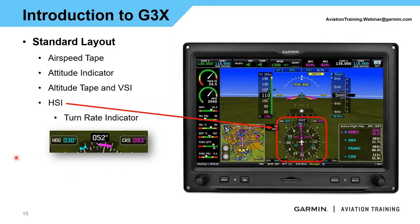At the very top of the HSI we also have another rate of turn indicator — that magenta bar right above the HSI itself. One line over, following standard logic, is half standard rate turn. The second white line is a full standard rate turn. If we're turning and that magenta line reaches the second line, we're flying a standard rate turn; going beyond means more than standard rate. So we're building in a cross-check between the attitude indicator and the HSI.